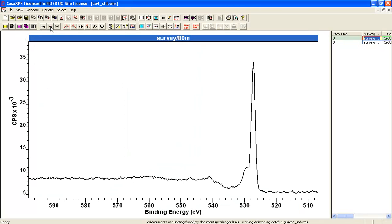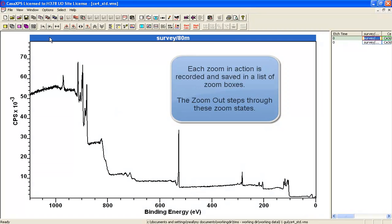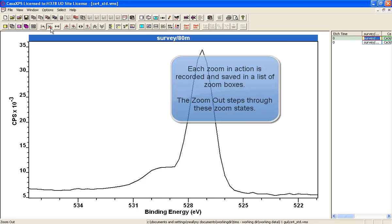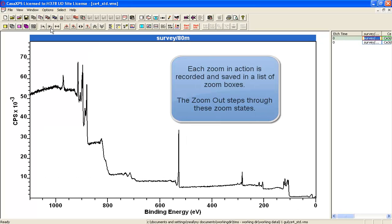When I press zoom out, it steps back through the list of zoom states, and if I keep on pressing, I will start cycling through those zoom states again.